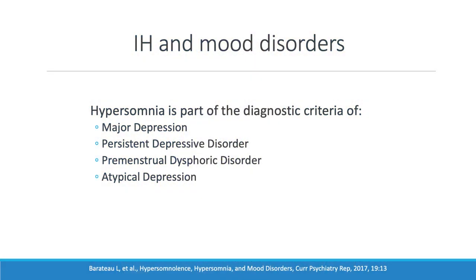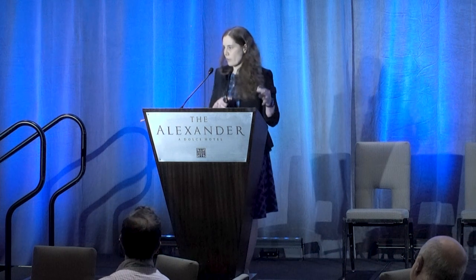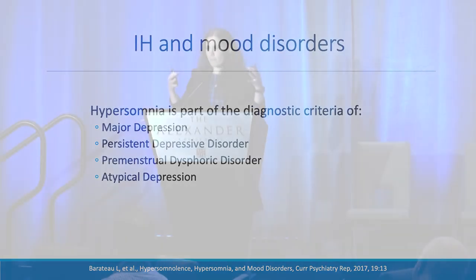The mood disorder overlap is one of the most important and challenging comorbidities in idiopathic hypersomnia. It really depends on which door you go in. If you ask psychiatrists about excessive daytime sleepiness and long sleep durations — hypersomnia — they'll say they see it all the time. Hypersomnia is part of the diagnostic criteria of major depression, persistent depressive disorder, premenstrual dysphoric disorder, and atypical depression. It's fundamental to the diagnosis of several mood disorders.